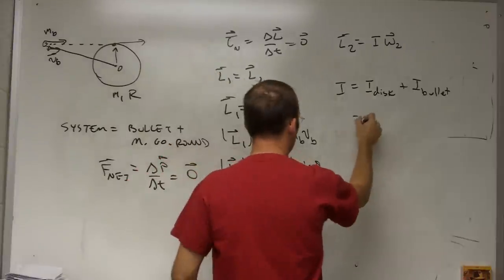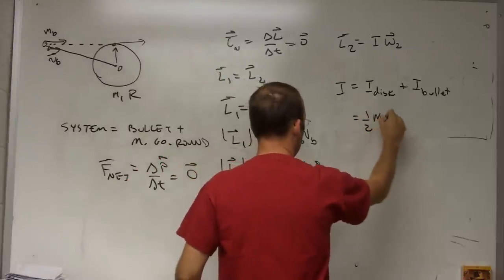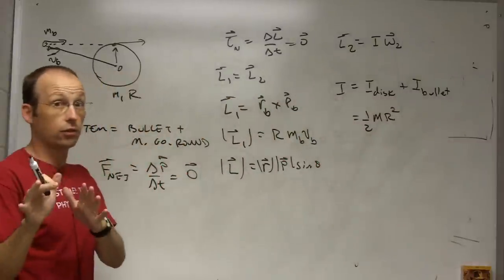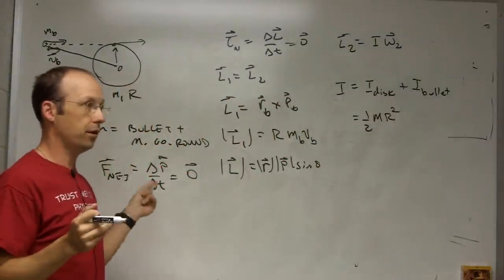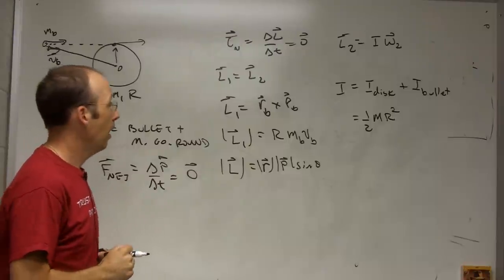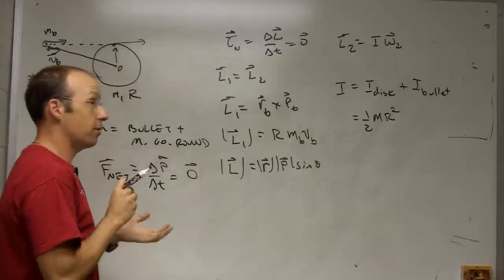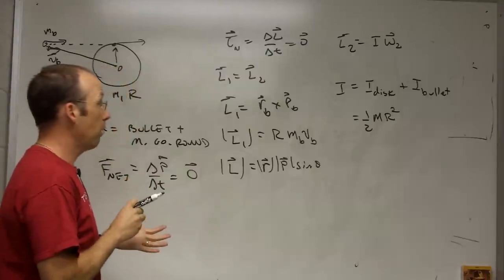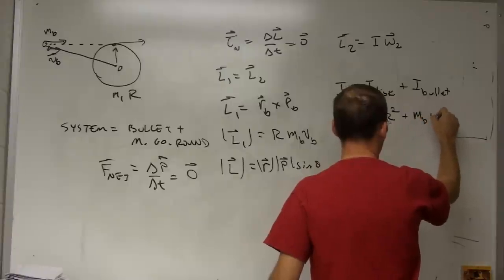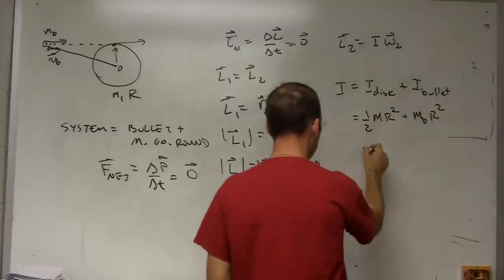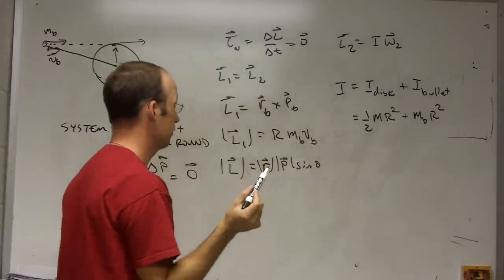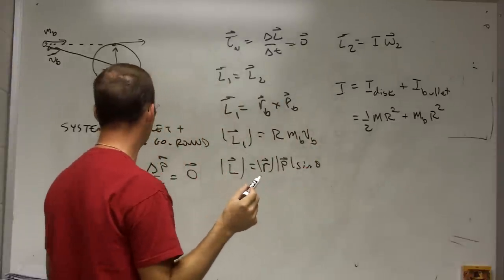Okay. So this is going to be one half big M R squared is the moment of inertia of a disk. I just derived that in the previous video, unless you're watching this video before that one. Then I derived that in the future. What about the bullet? It's just a point mass. So the moment of inertia of a bullet is just going to be equal to mass of the bullet R squared. So that's my moment of inertia.